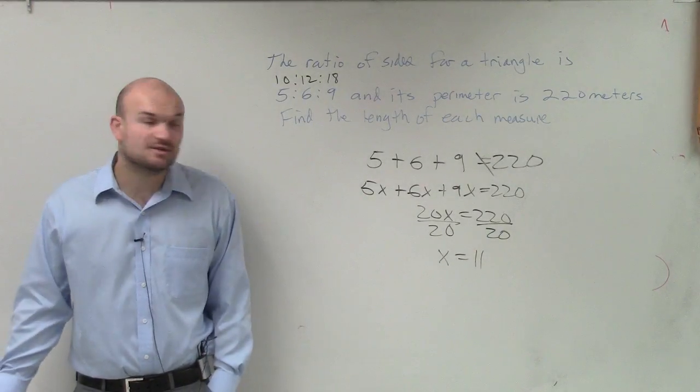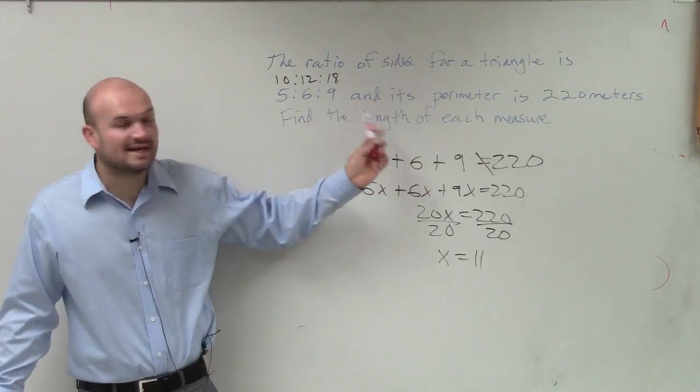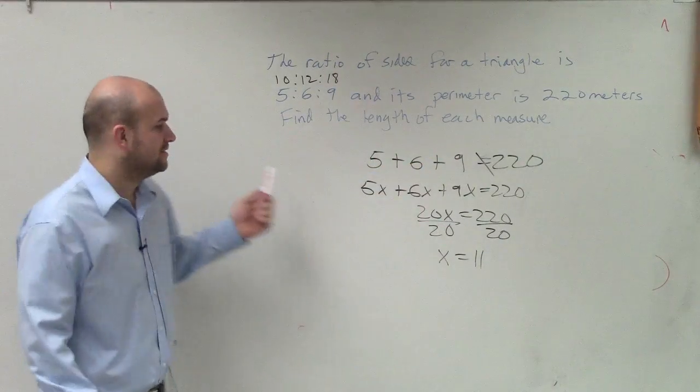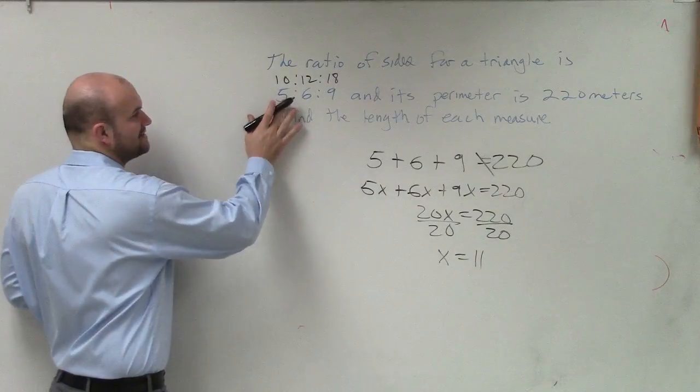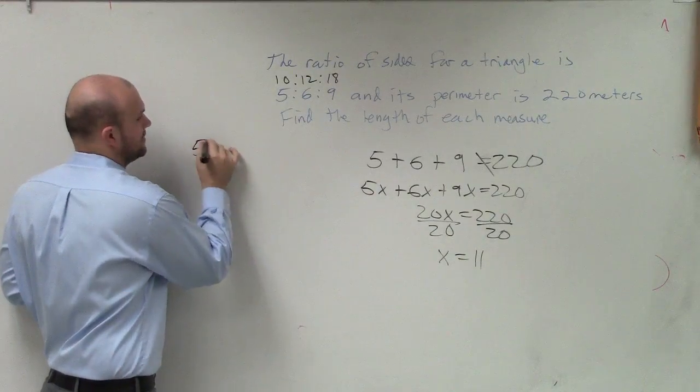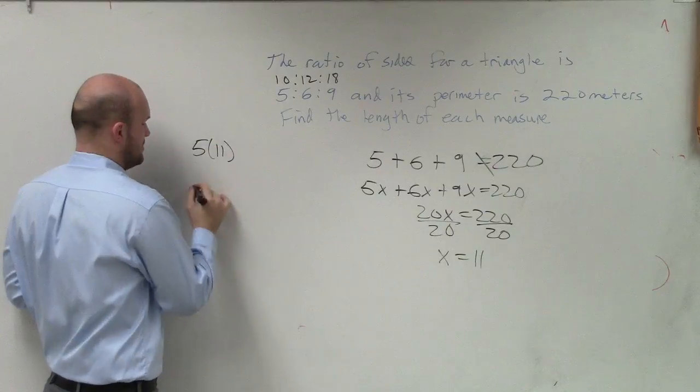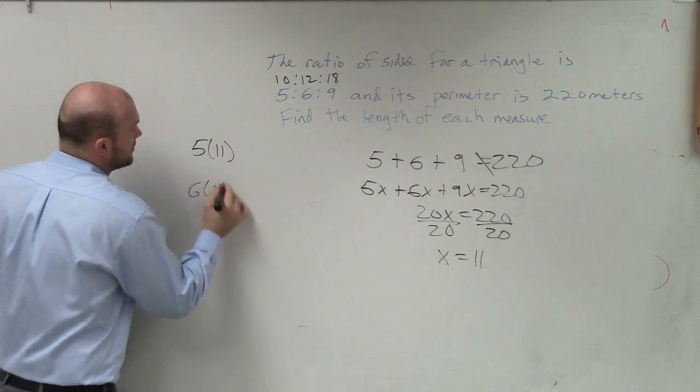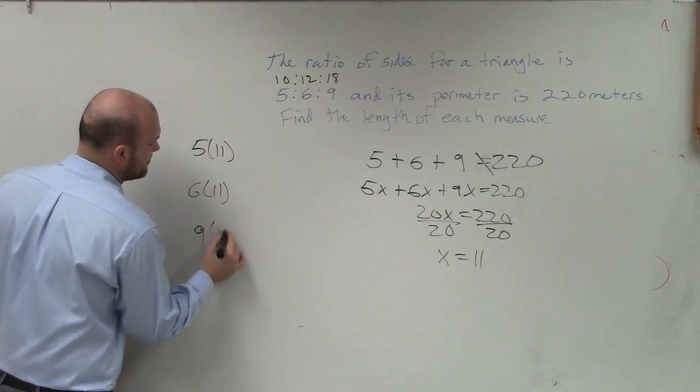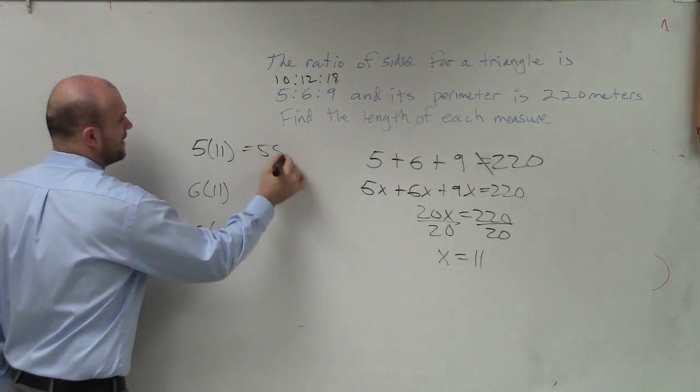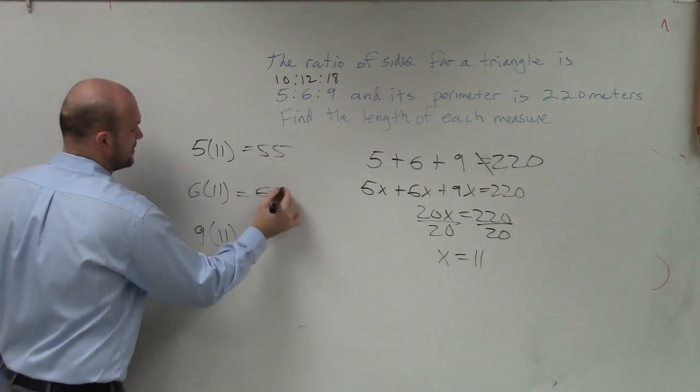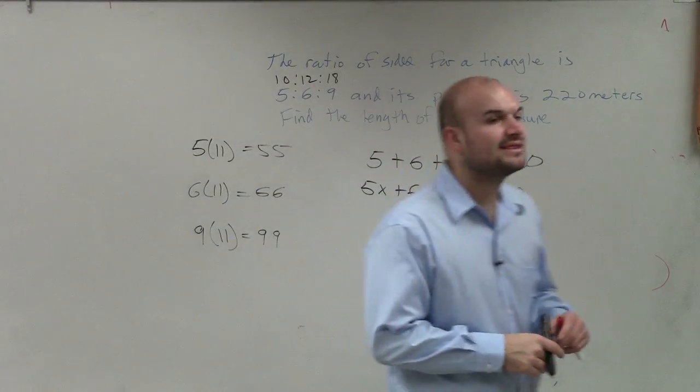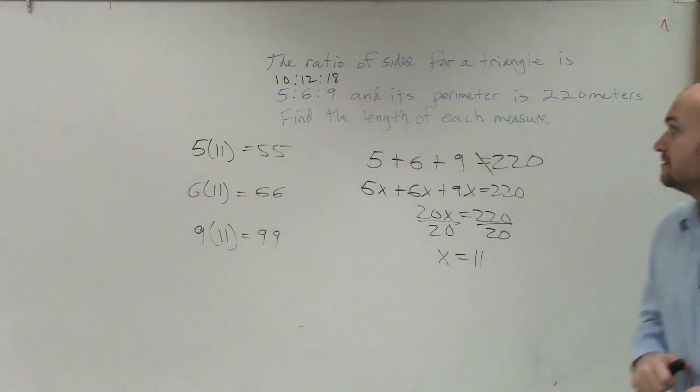So now, what does the question ask? Find the length of each measure. So I need to find the length of each side. If one side was 5 but it's being multiplied by 11, then I have 6 being multiplied by 11, and 9 being multiplied by 11. I have 55, 66, and 99. Those are my lengths of my triangles.